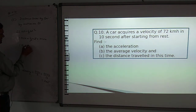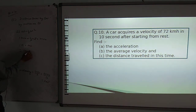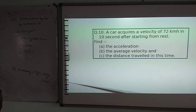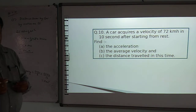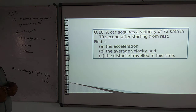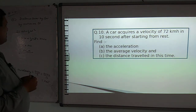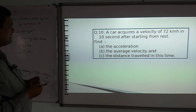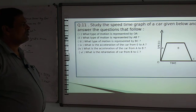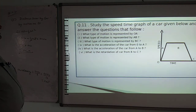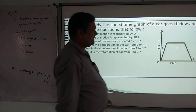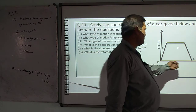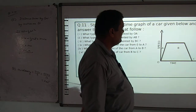That gives 0 + ½ × 2 × 100 = 100. So the answer is that the car completes a journey of 100 metres in 10 seconds. Now we move to the next question, which is graph-based.